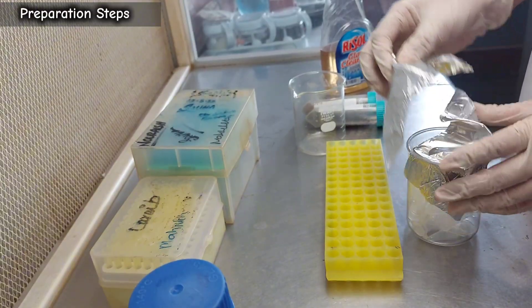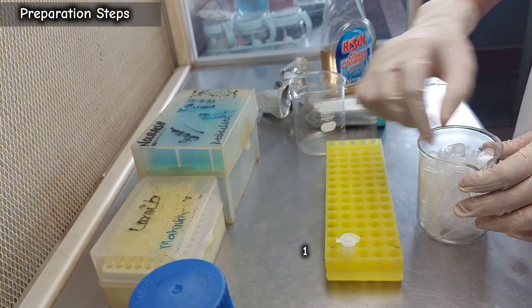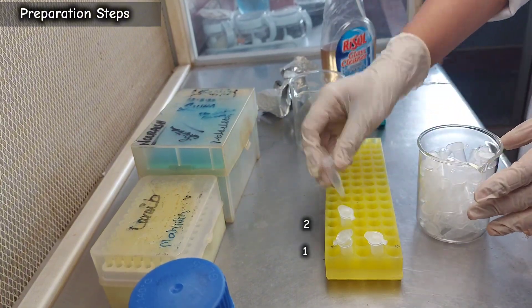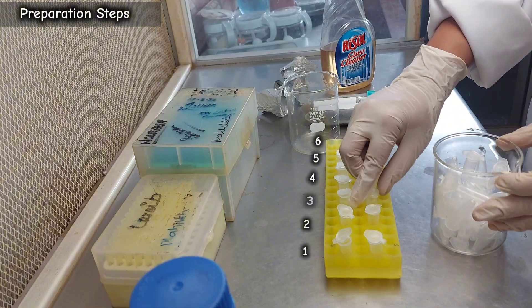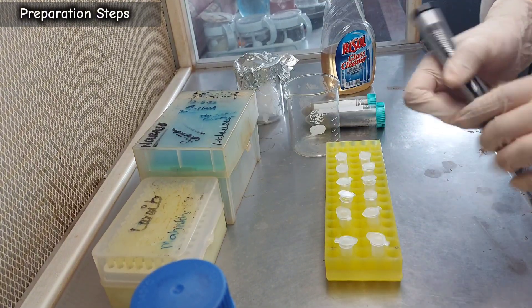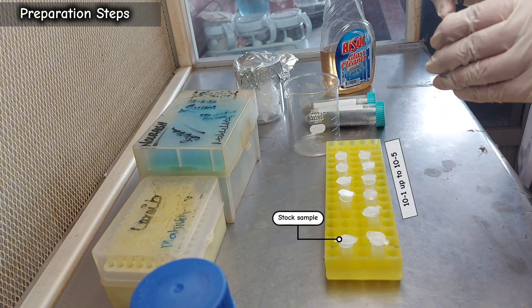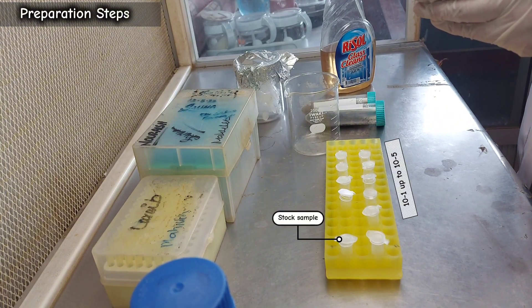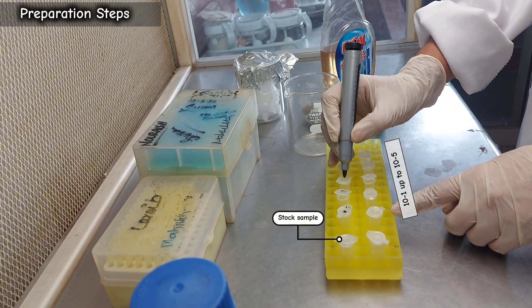Take out your autoclaved Eppendorf tubes and place them on an Eppendorf stand. You will need six tubes per sample. Label the first tube as the stock sample and the subsequent tubes as 10 to the power of negative 1, 10 to the power of negative 2, and so on, up to 10 to the power of negative 5. Here we will work with two samples.